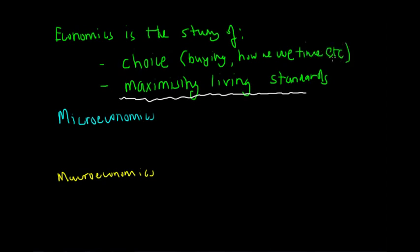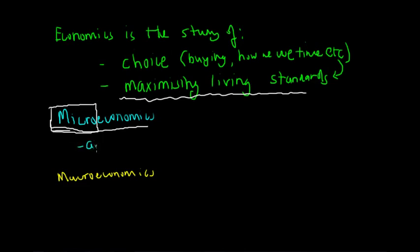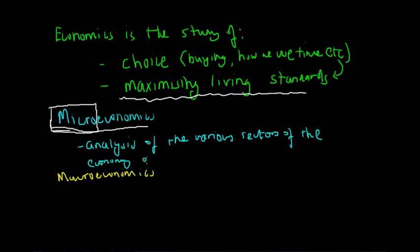Choices include buying stuff, how we use our time, and anything else you can think of — these have a direct correlation to our living standards. We can break up economics into two separate sub-disciplines: microeconomics and macroeconomics. Firstly, let's focus on microeconomics. As the prefix suggests, micro means small, and microeconomics focuses on the analysis of how the various parts making up the total economy actually operate.